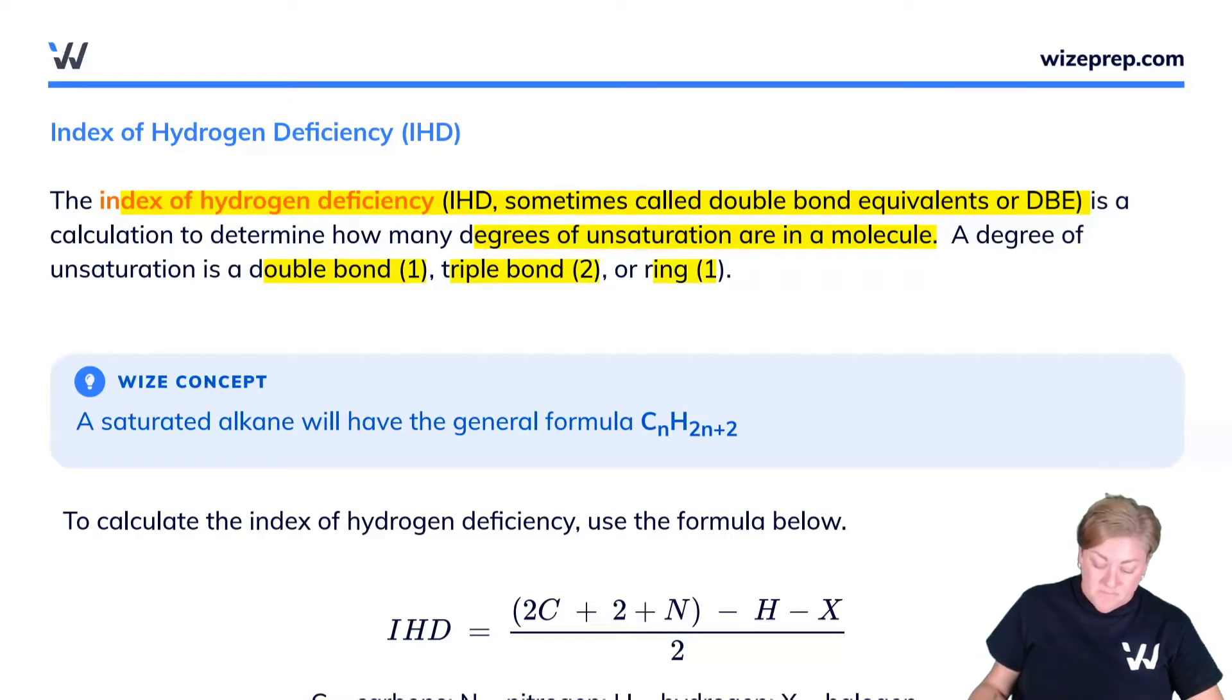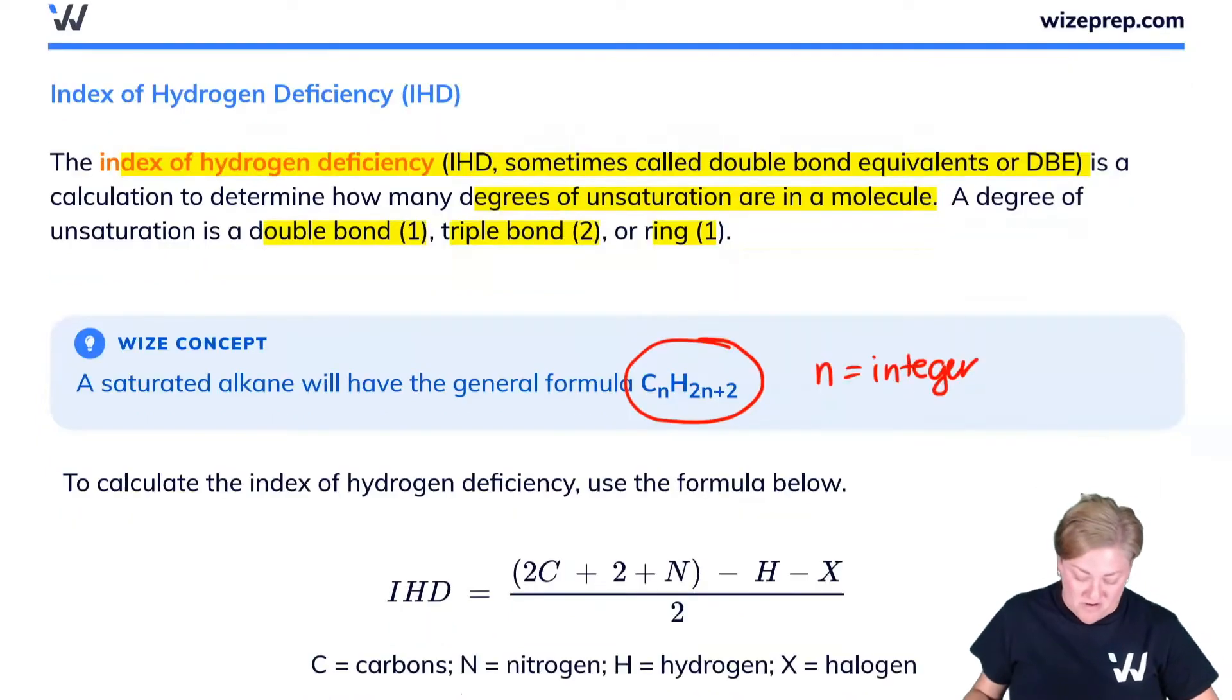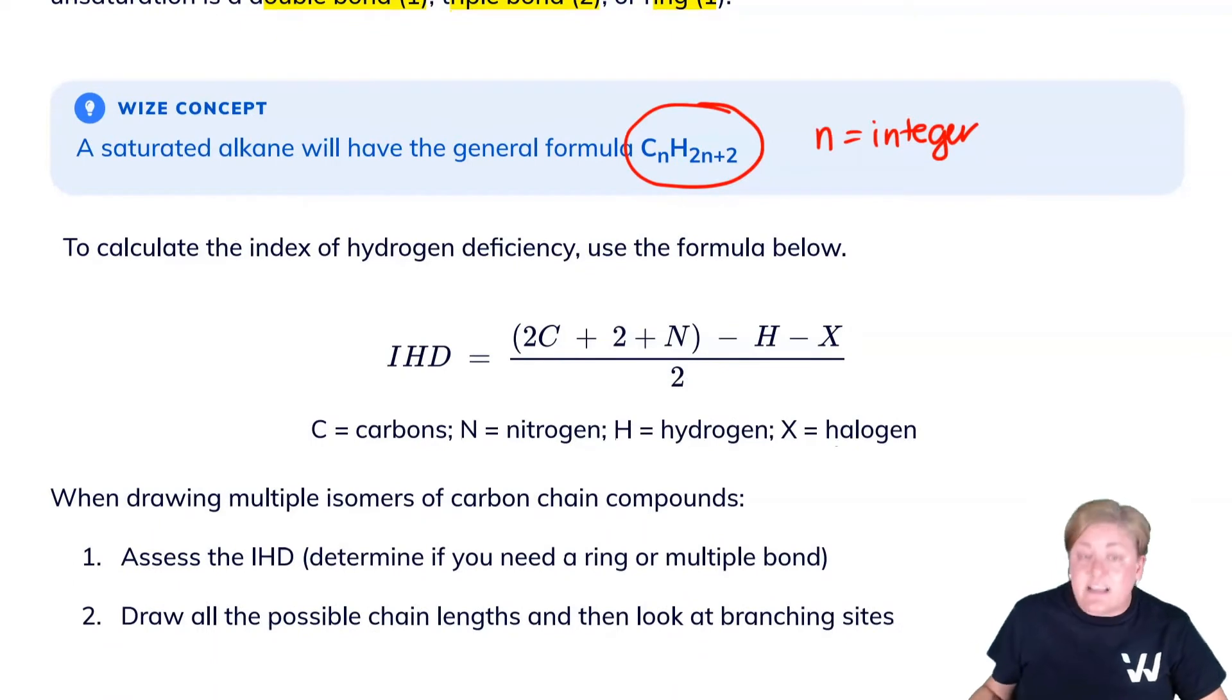A saturated alkane has a general formula of CnH2n+2 where n is an integer. If this is not the molecular formula, that means we have an element of unsaturation. The good news is it's a pretty quick calculation to work this out. To calculate this, we use the index of hydrogen deficiency calculation.